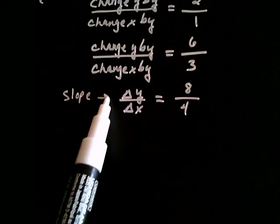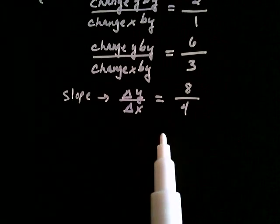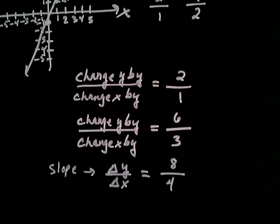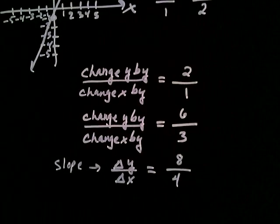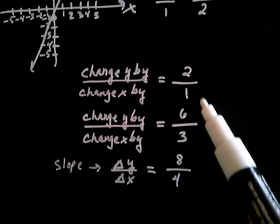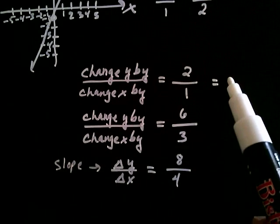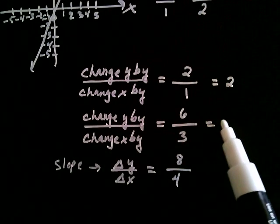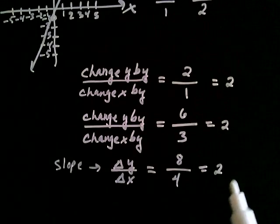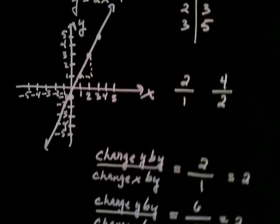So you've been actually calculating the slope whenever you calculate that fraction. What you're discovering is that in all these cases — 2 over 1, 6 over 3, 8 over 4 — they all equal the number 2. So this line has what we call a slope of 2, and what that means is that every time x changes by 1, y would have to change by 2.